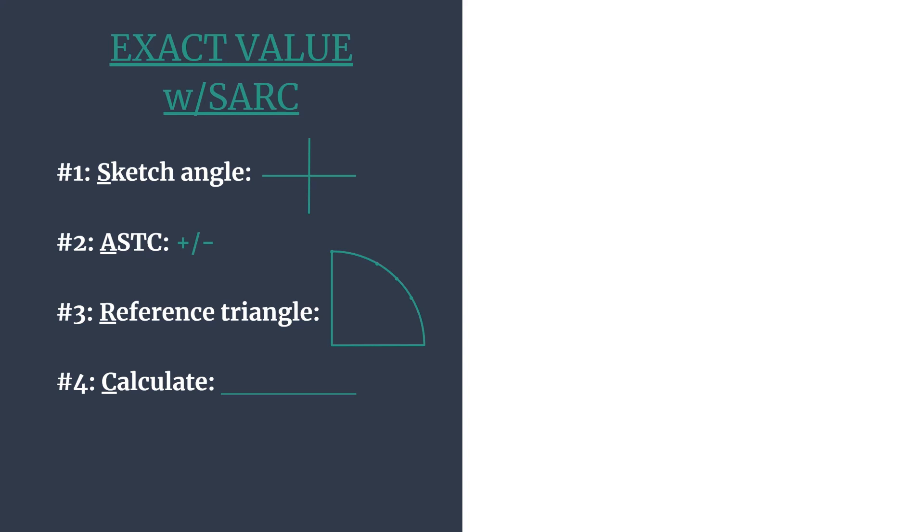In step four we can calculate—that's the C. We'll simply use our trig ratio, perform the calculation with that ordered pair, and we'll have our exact value of the cosine of 225 degrees.